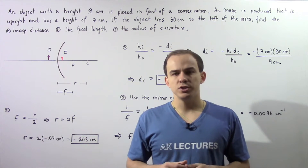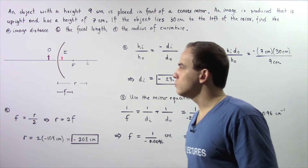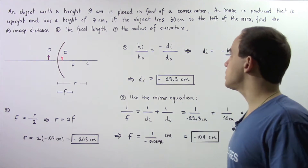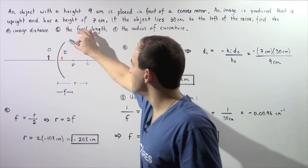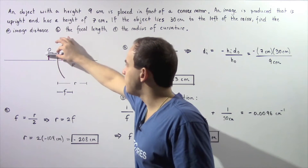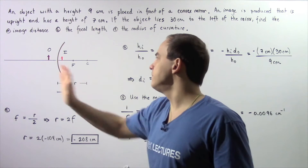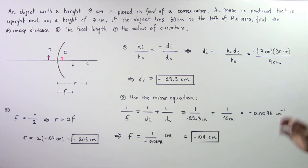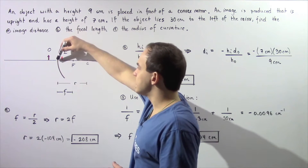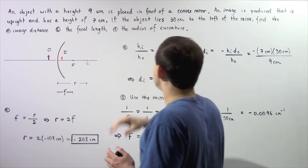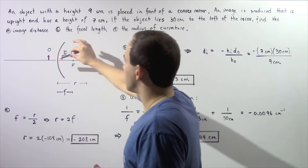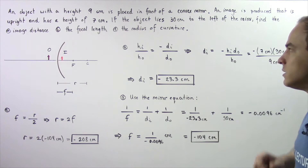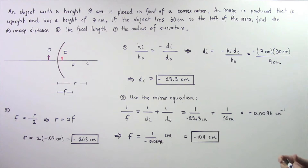Let's continue solving examples using convex mirrors. Suppose that an object with a height of 9 centimeters is placed in front of a convex mirror as shown in the following diagram. We place the object — given by the symbol O — in front of our mirror. The object lies 30 centimeters to the left of the mirror, so the object distance is 30 centimeters. We need to find: (a) the image distance, (b) the focal length, and (c) the radius of curvature.